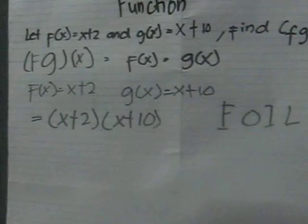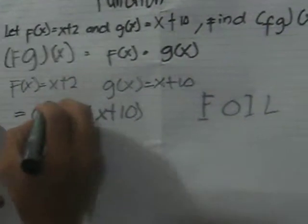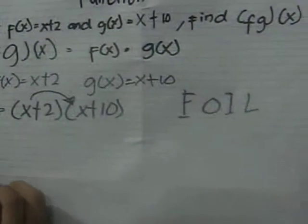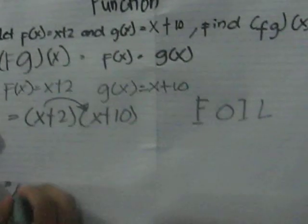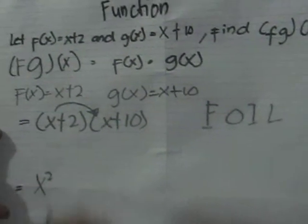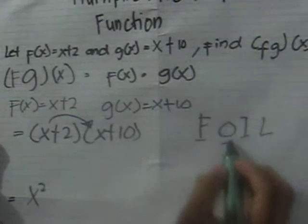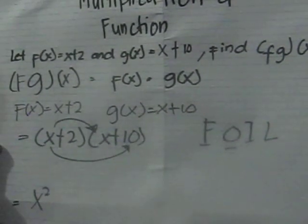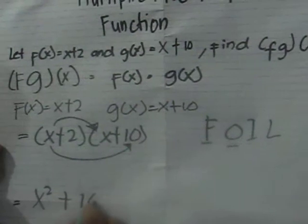We will multiply first the first term. The value of this is x squared. Multiply the outer term. The value is 10x.